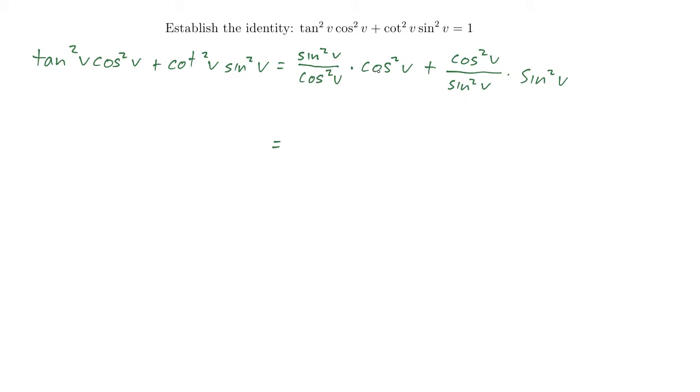Sine squared v over cosine squared v times cosine squared v. Cosine squared v on top and bottom. So we're just left with sine squared v. And a similar thing happens with the second expression. Cosine squared v over sine squared v times sine squared v. The sine squared v's cancel. We're just left with cosine squared v.